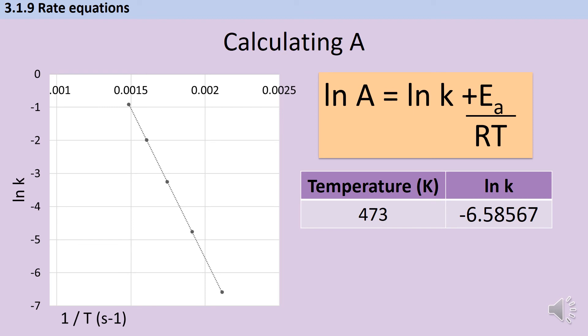In my initial table, I had the temperature, and I calculated the natural log of k, and then I've just worked out the activation energy. And obviously, R is the gas constant, so it just doesn't change. So I can put all of that information into this equation to get a value for the natural log of A.